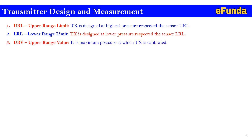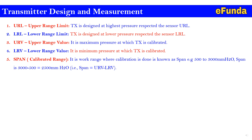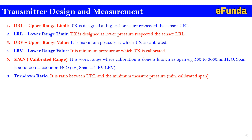URV is the Upper Range Value — the maximum pressure at which the transmitter is calibrated. LRV is the Lower Range Value — the minimum pressure at which the transmitter is calibrated. Span, also called calibrated range, is the working range where calibration is performed. For example, 500 to 3000 mm of H₂O gives a span of 2500 mm of H₂O. Span equals URV minus LRV.